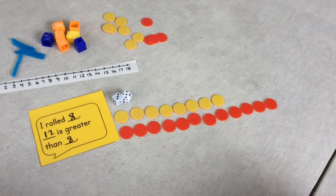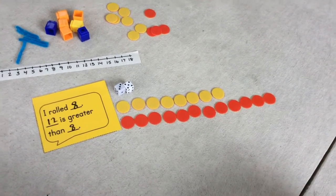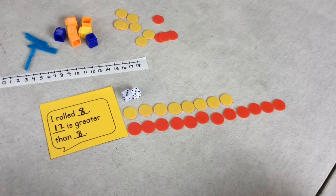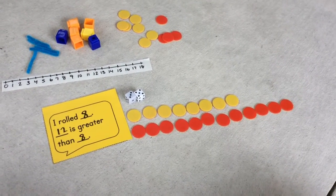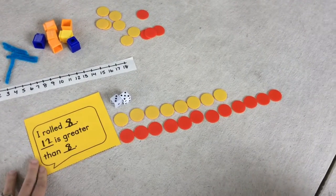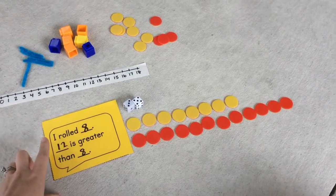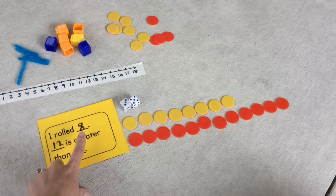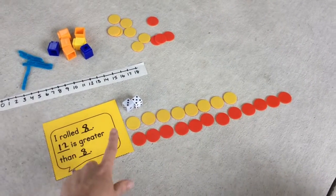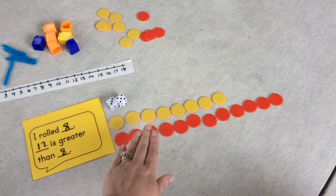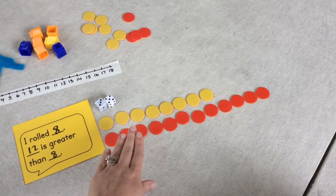Now to show your teacher your work, you're going to make a video on Seesaw explaining what you did. So in your video, you're going to say, I rolled, say the number, and blank is greater than blank. So you're going to read what you have on your card and you're going to explain how you know that.